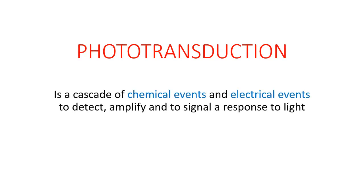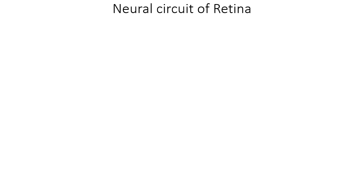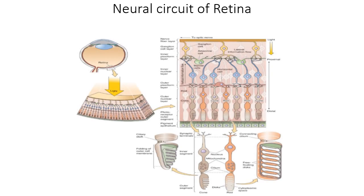Phototransduction is a process of signal transduction where light is converted to chemical energy and then electrical energy, which detects and amplifies the light signal. Before going into phototransduction, we need to know about the neural circuit of the retina. This is a schematic diagram of the retina showing different layers of neuronal cells.